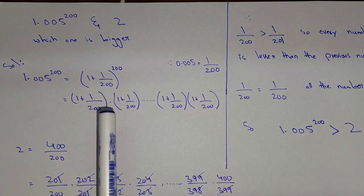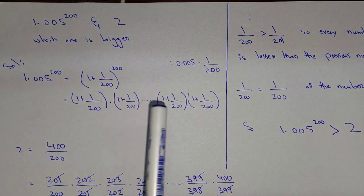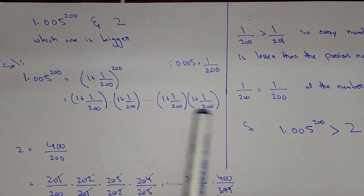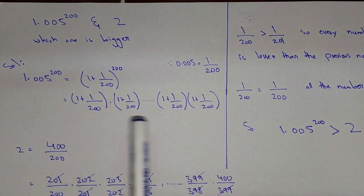We can write this as 1 plus 1 over 200 into 1 plus 1 over 200, 200 times. Let's suppose these are the 200 numbers.